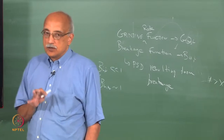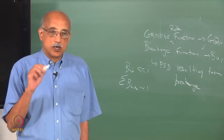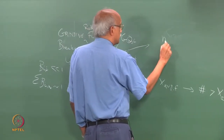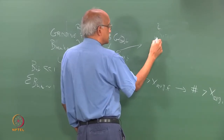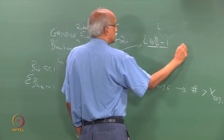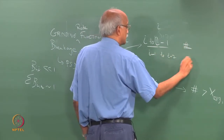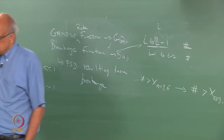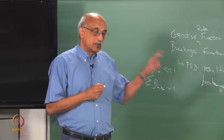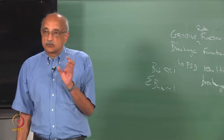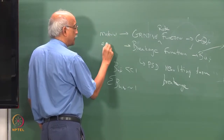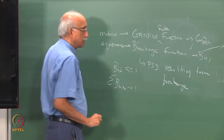The breakage function parameter b_{iu} gives data on number of particles in each size range — so starting with a particle of size i, it tells you how many particles fall in the range i to i−1, i−1 to i−2, and so on. The breakage function is very much dependent on the design of the mill and the size reduction equipment, whereas the grinding rate function is actually more a function of the material itself. So the material has a greater influence on the grinding rate function and the equipment design has a greater influence on the breakage function.